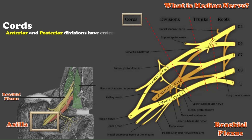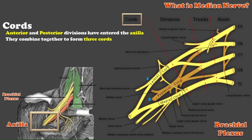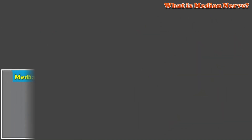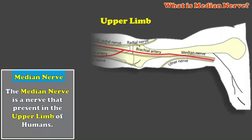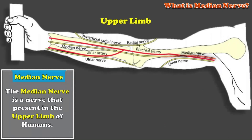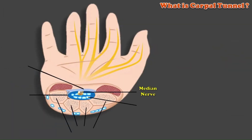There are three cords. The first is the lateral cord, the second is called the posterior cord, and the third is called the medial cord. The lateral cord and medial cord combine together to form the median nerve. After that, the median nerve enters the arm, passes through it, and enters the wrist. The part of the wrist where the median nerve passes is called the carpal tunnel.